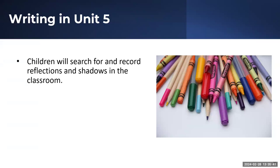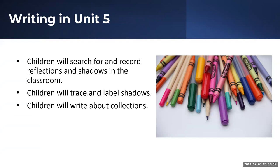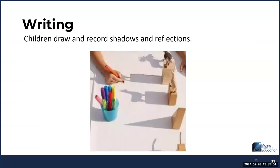In the Writing Center for Unit 5, children will search for and record shadows and reflections in the classroom, trace and label shadows, and write about collections. Children will search the room for shadows or reflections depending on the week and record their findings on classroom maps. They will also have the opportunity to trace and label shadows. Compare and contrast the shadows and reflections found, talk about how the reflection or shadow was made, whether it was from a natural or artificial source of light, and how something is a reflection and not a shadow — and vice versa.